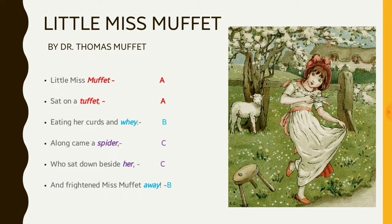Now look at the end of the fourth line. It ends with spider. So again spider doesn't match with whey or Tuffet or Muffet. So it gets a new alphabet C. The next line ends with her and it beautifully rhymes with spider. So we can give it C. And the poem ends with away, and away rhymes with the third line — it ends with whey and the last line ends with away. So we can assign the last line with the alphabet B.